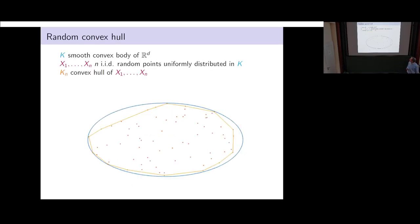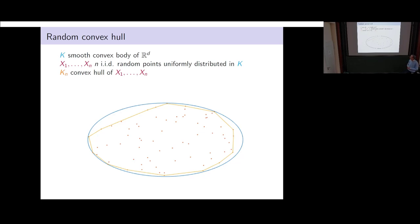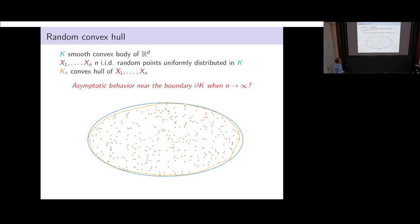Let me quickly remind you the model. Consider a convex body K which is smooth — it has a boundary in the dimension of the leaving space. Then you take N points which are IID, uniformly distributed inside the convex body, not on the boundary, inside the convex body. Then you construct the convex hull of these N points. The question is: what happens when the size of the input goes to infinity? Can you say more about the boundary of this random polytope?